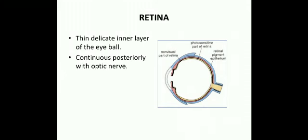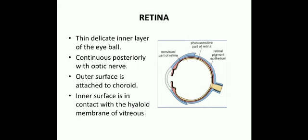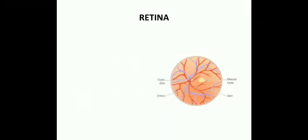The retina is the thin, delicate inner layer of the eyeball. It continues posteriorly with the optic nerve. Its outer surface is attached to the choroid and the inner surface is in contact with the hyaloid membrane of the vitreous. Opposite to the optic nerve there is a circular area called the optic disc, which is about 1.5 millimeters in diameter.